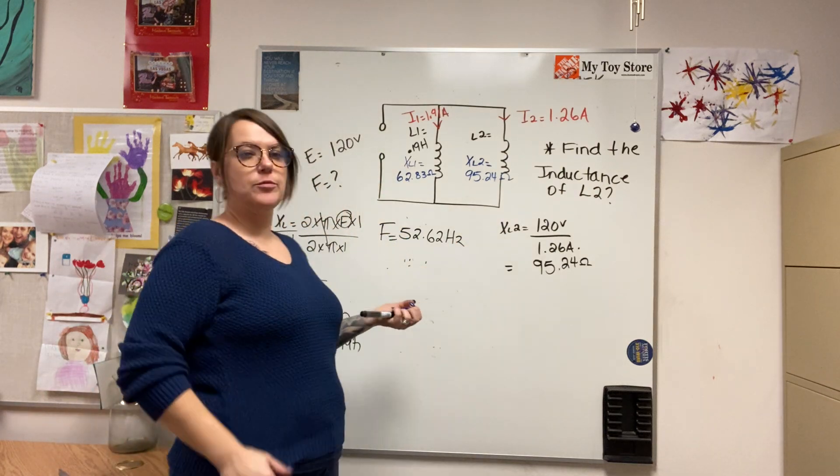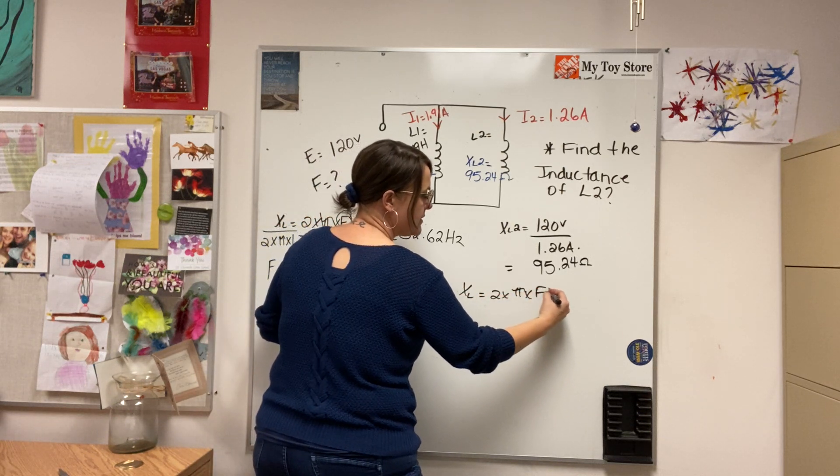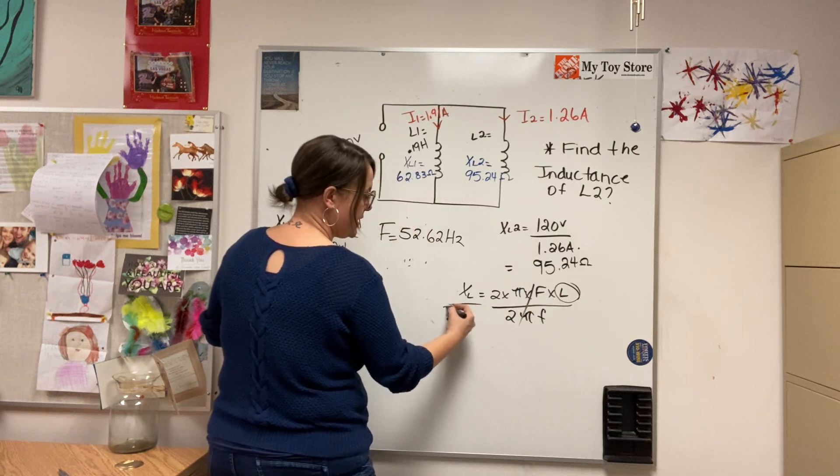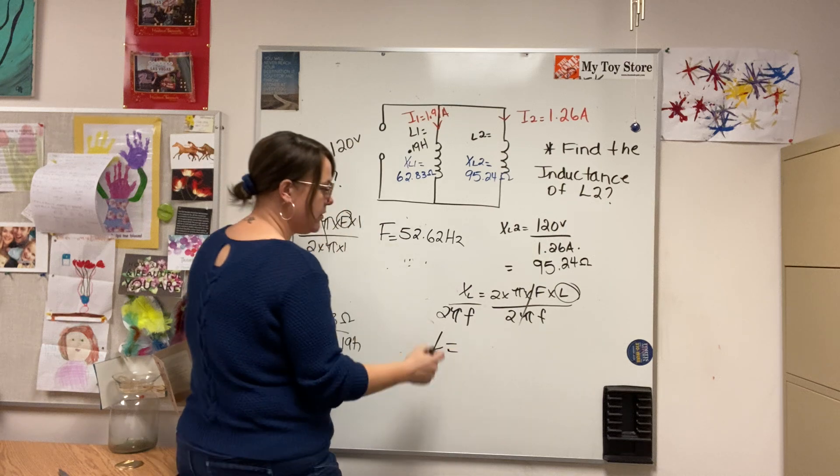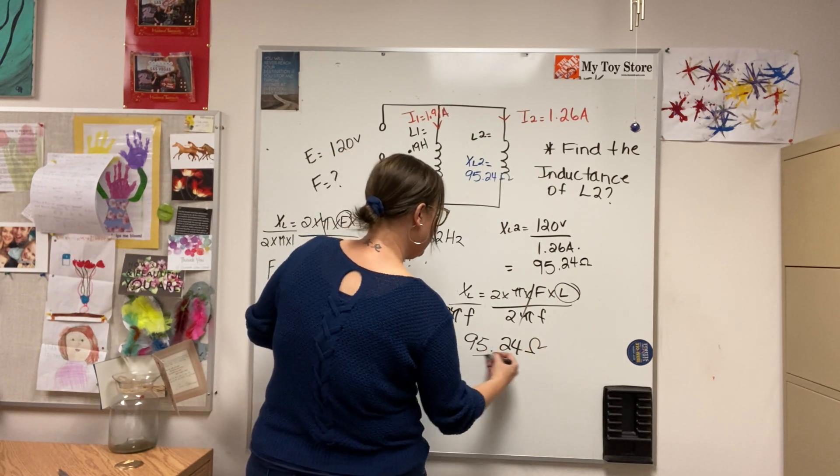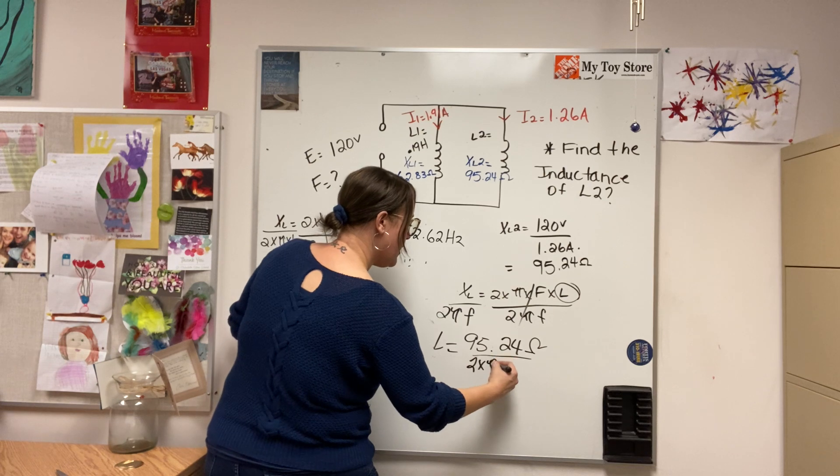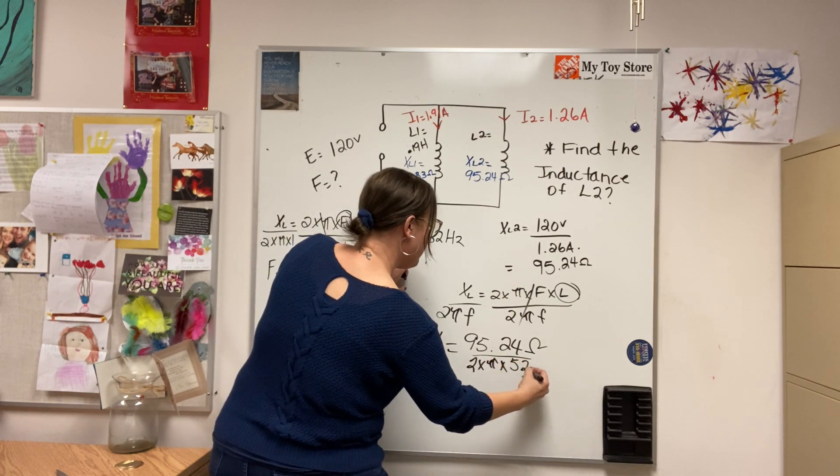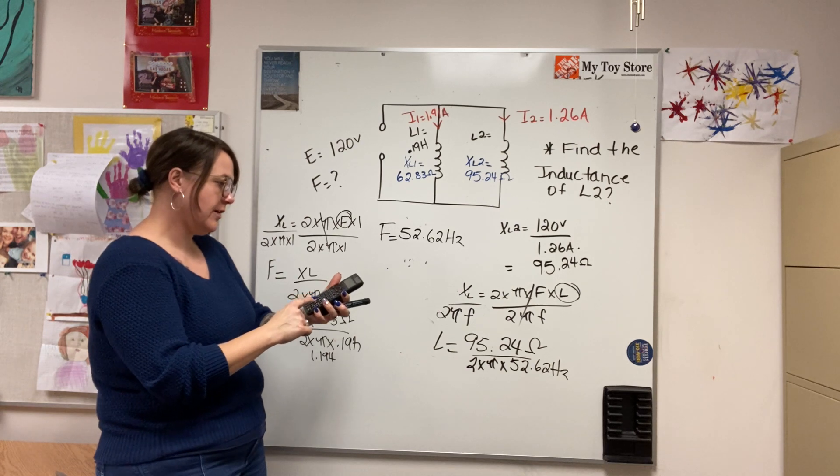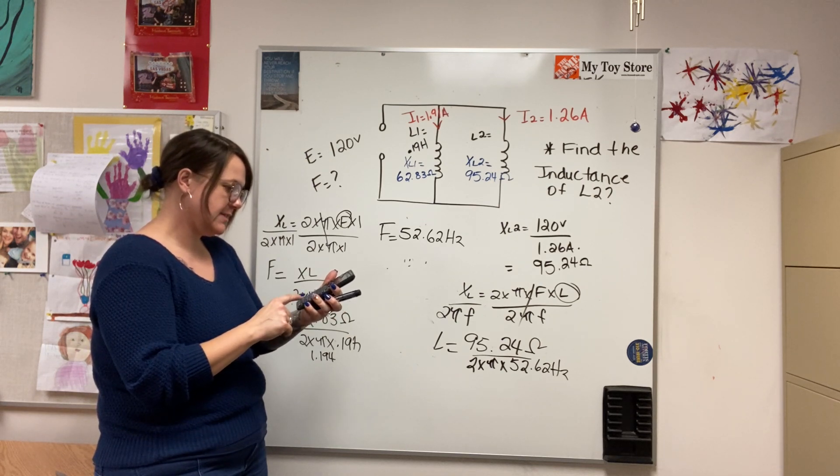Now that I have the XL, I can work that formula backwards to get my L. So XL equals 2 times pi times frequency times L. I want to get L on its own, so I divide by 2 pi F. What I do on one side, I do on the other. So L will equal XL, 95.24 ohms, divided by 2 times pi times frequency, which in this case is the frequency given here. So 2 times pi times 52.62 hertz.